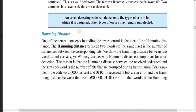Hamming distance and error detection are related. On the sender side, there is a codeword sent, and on the receiver side, there is a codeword received. We can use Hamming distance to detect errors — for example, if there is a difference between the sent and received codeword.